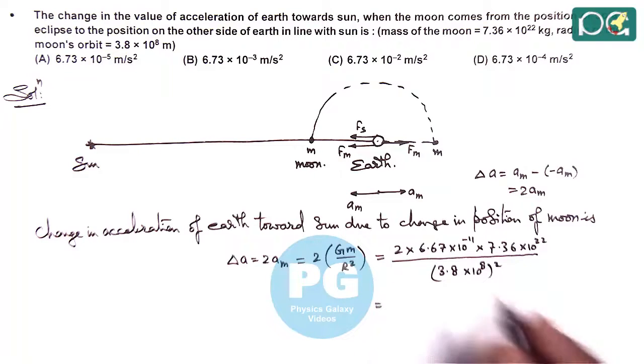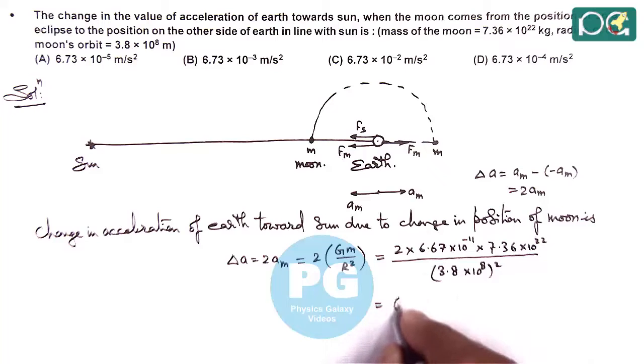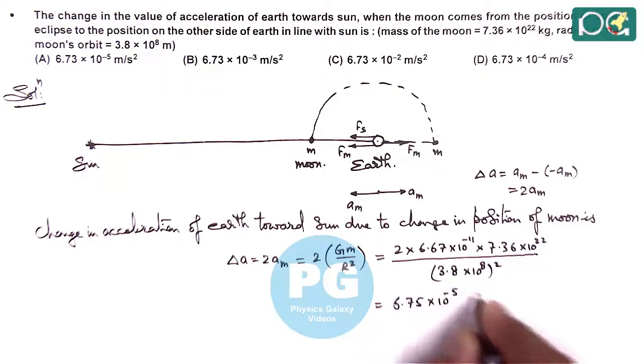This is a simple calculation, I leave it as an exercise for you. When you solve this gives us 6.75 × 10^-5 meter per second square.